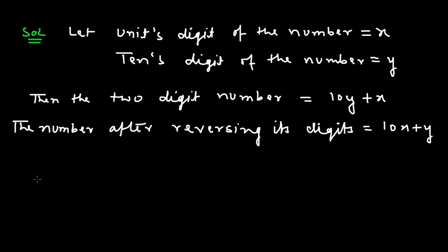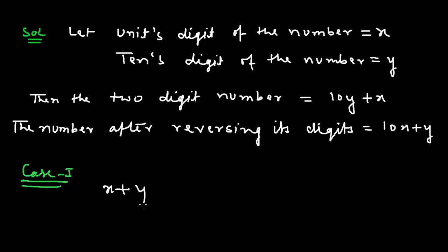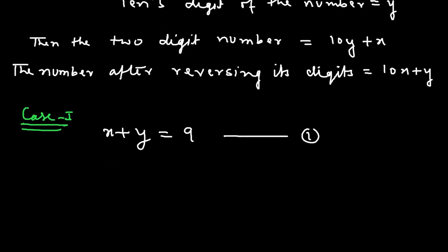In case 1, we are told that the sum of the digits of the 2-digit number is equal to 9. This means x + y = 9. This is our equation number 1.